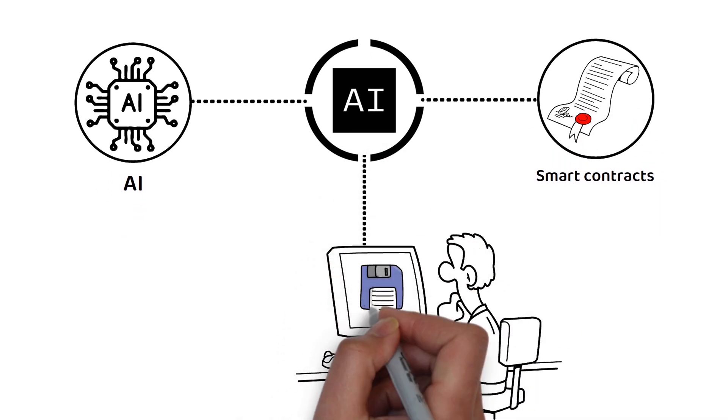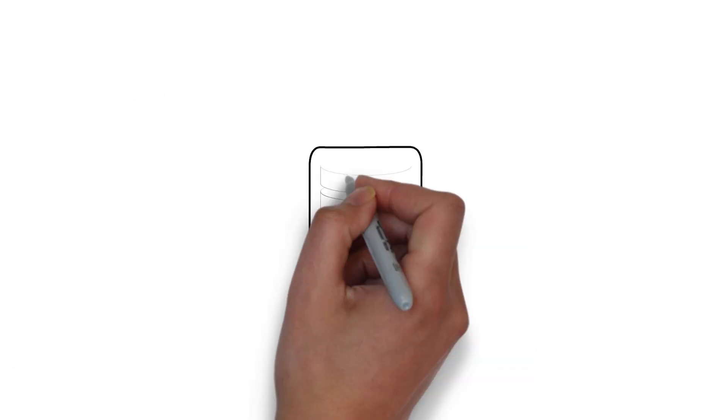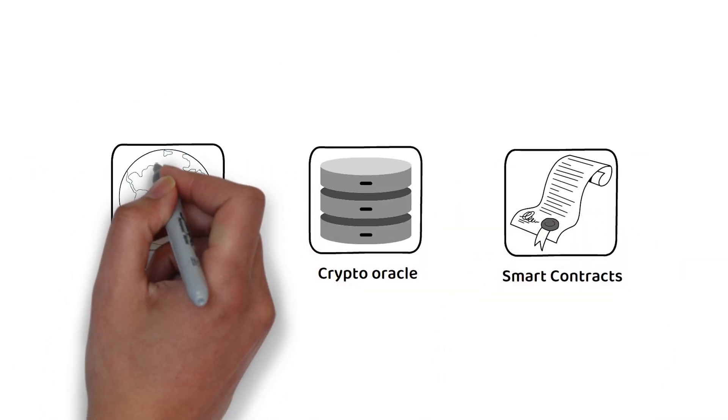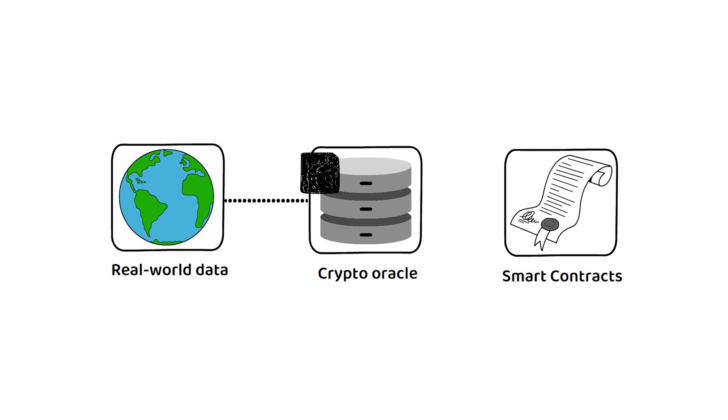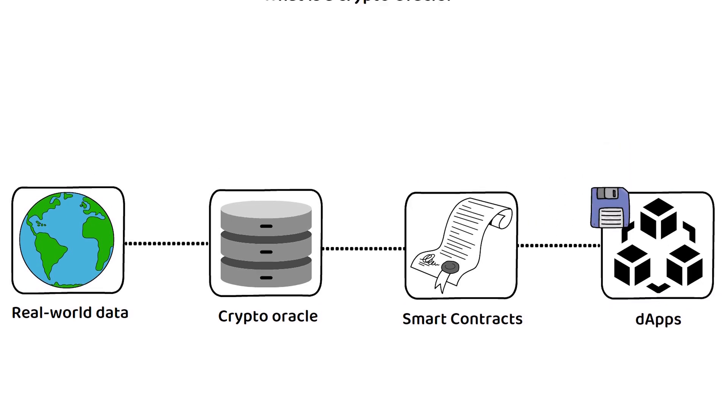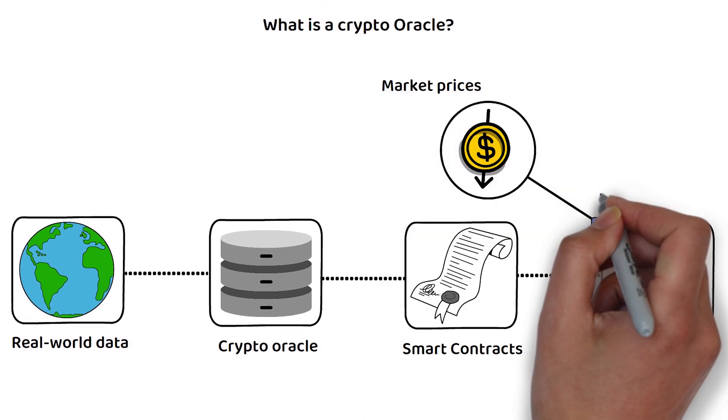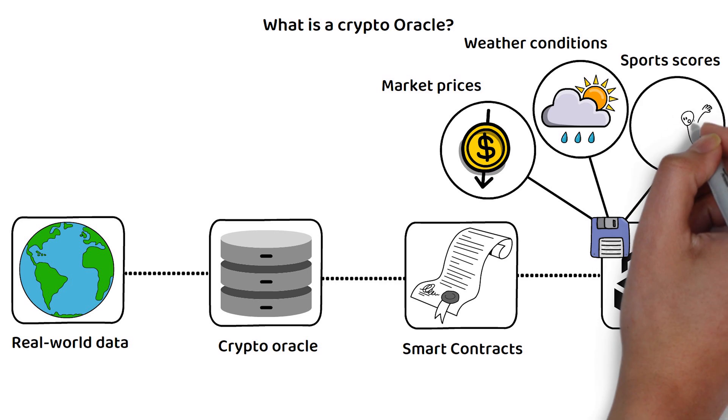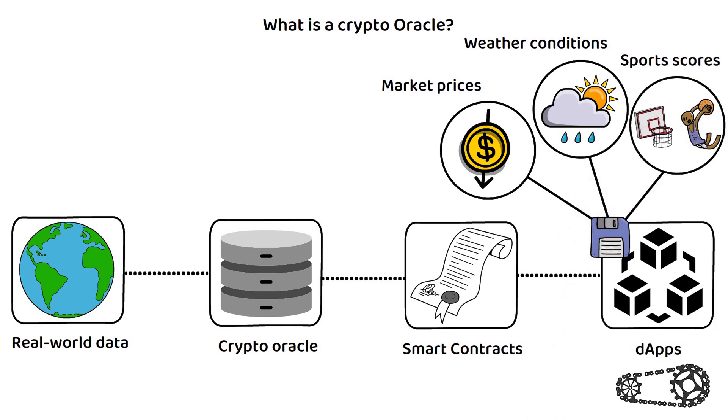To break that down, a crypto oracle is a service or mechanism that provides blockchain smart contracts with real world data, enabling decentralized applications to access information from outside the blockchain, such as market prices, weather conditions or sports scores, which it then uses to execute conditional logic autonomously.